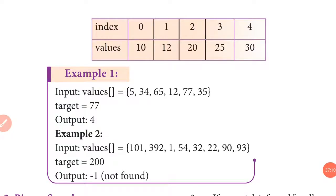In summary, in today's class we discussed: complexity of an algorithm, time factor, space factor, time complexity, space complexity — including fixed part and variable part — efficiency of an algorithm, methods for determining efficiency, space-time trade-off, and the three asymptotic notations: Big O for worst case, Big Omega for best case, and Theta for average case.